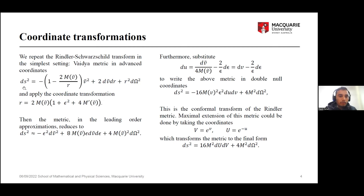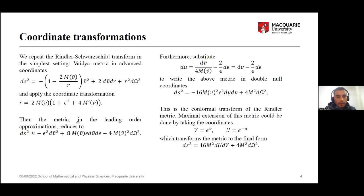We take a Vaidya metric in advanced coordinates, and after some trial and error, perform a coordinate transformation, after which we get a particular form of the metric. If the mass is constant and does not depend on the advanced time parameter V, this is a Rindler metric in advanced coordinates. However, here the mass depends on time, so we cannot directly say that this is a Rindler metric and we have to perform a further transformation.